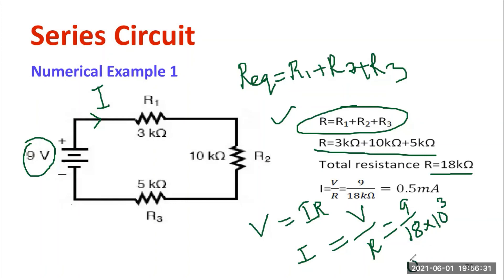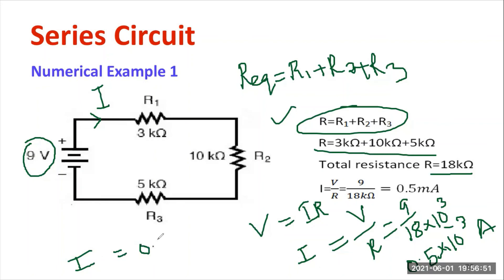9 divided by 18 equals 0.5, and 10 to the power 3 in the denominator becomes 10 to the power minus 3 in the numerator. So the current is 0.5 times 10 to the power minus 3 amperes — that is 0.5 milliamperes.